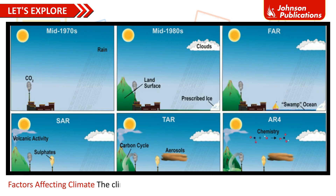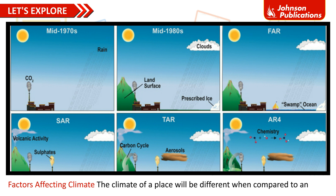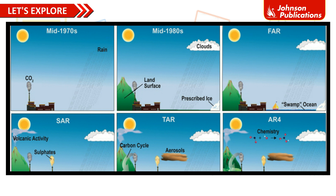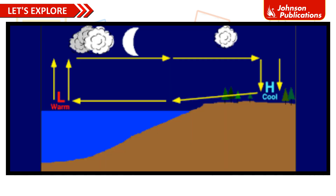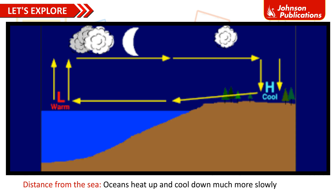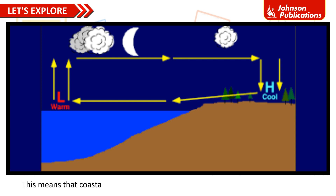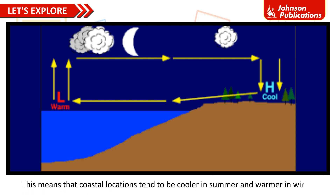The climate of a place will be different when compared to another. One factor that affects the climate of an area is distance from the sea. Oceans heat up and cool down much more slowly than land. This means that coastal locations tend to be cooler in summer and warmer in winter.